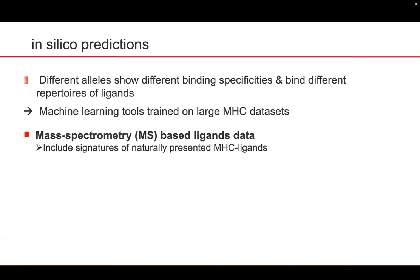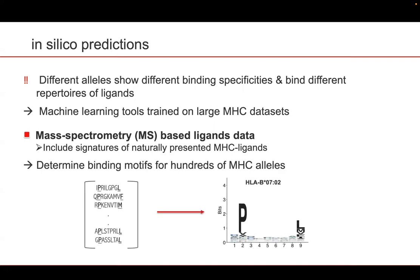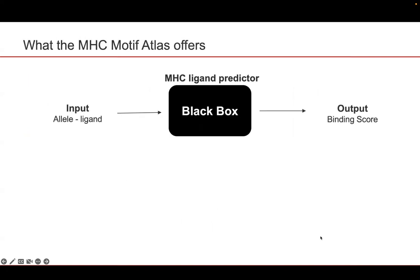Over the last decade, mass spectrometry-based MHC ligand data have become the dominant source of information about MHC binding specificities. These data enable researchers to determine binding motifs for hundreds of MHC alleles. Here is an example of a binding motif of an allele — this is a list of ligands of the same length, and we can clearly see the binding specificity at positions 2 and 9. However, MHC ligand prediction tools are often used as black boxes and do not necessarily provide explanation on why a peptide gets a good or a bad score.